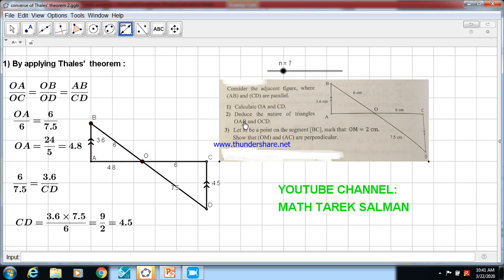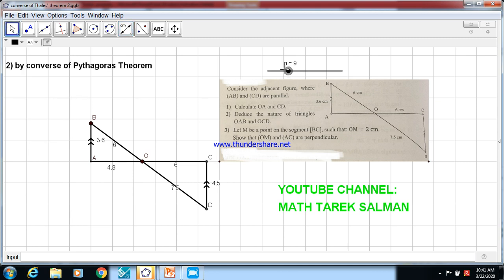Now, deduce the nature of triangle OAB and OCD. I use Converse of Pythagorean theorem in this case because to determine the nature of OAB, we have all the sides. Take OB squared equals 6 squared equals 36. OA squared plus AB squared equals 3.6 squared plus 4.8 squared equals 36. Also, we see that they are equal. So by Converse of Pythagorean theorem, the triangle OAB is right at A. Right at A because this one is the hypotenuse.